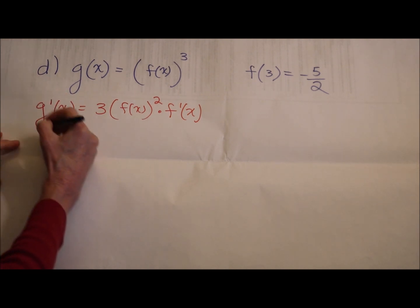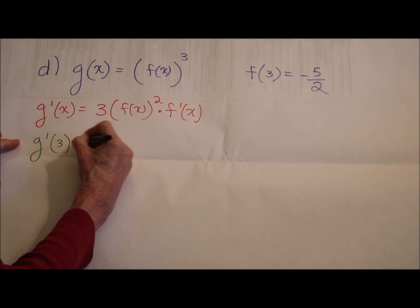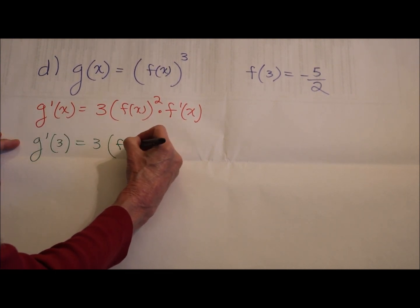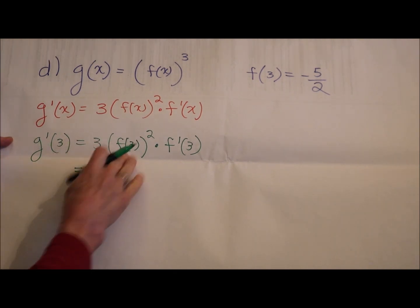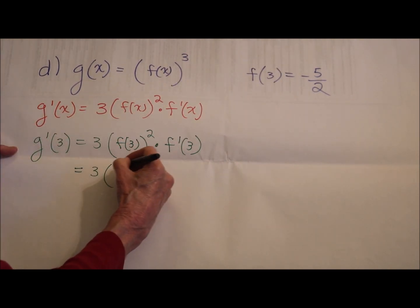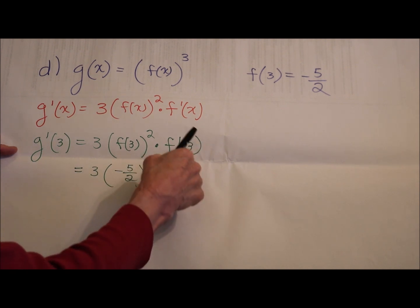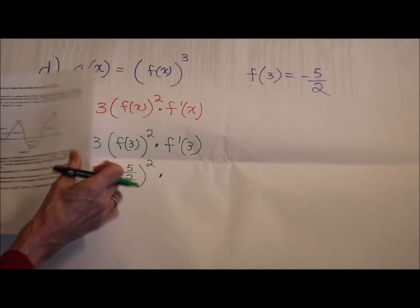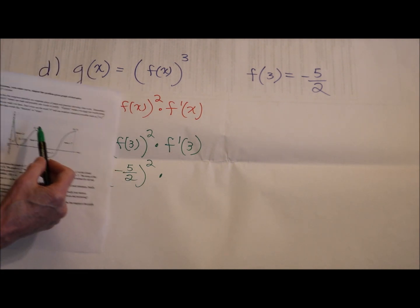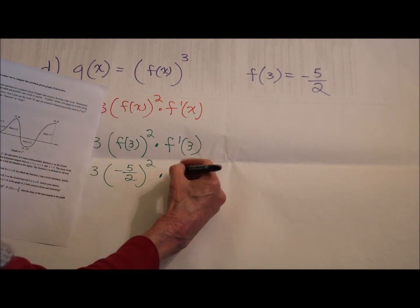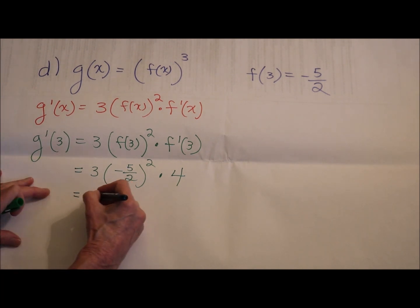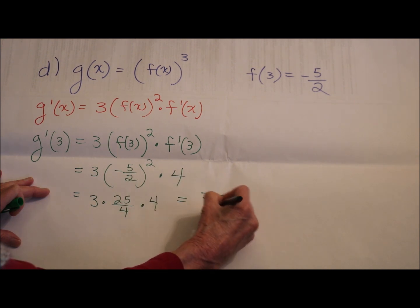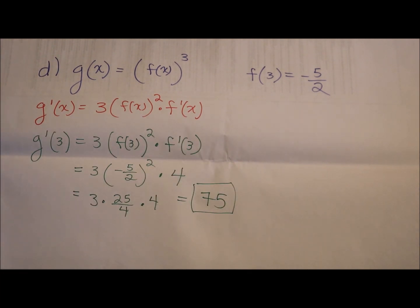Let's substitute in the 3. They were good enough to tell us what f of 3 is, so that's negative 5 halves. f prime of 3 - well, we have the graph of f prime, so let's just look and see. On the graph, they tell us when x is 3, y is 4. The y in this case is f prime. And there's your answer: 75 is your answer.